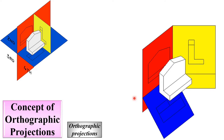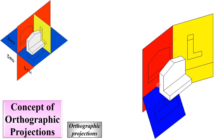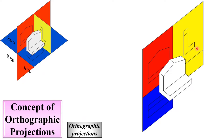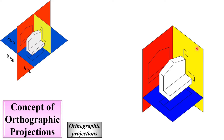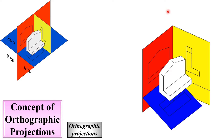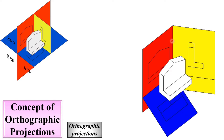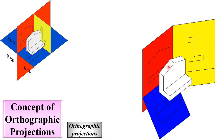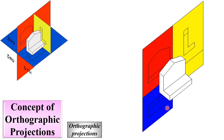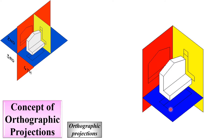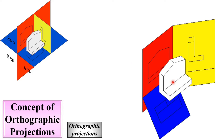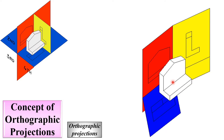According to the first angle projection method, if you see from this direction, then your view will be on the opposite side. Here also you can see — if you see from the top, then your view is actually on the bottom side of this object. So, this is according to the first angle projection method.